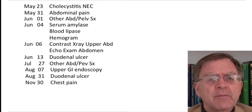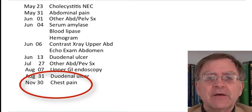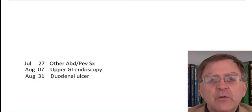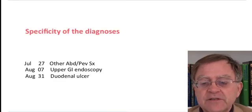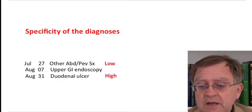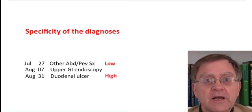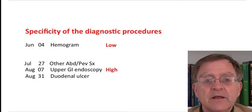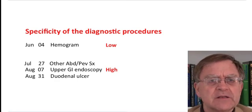That's the clinical story we might imagine from these insurance claims data. That diagnosis of chest pain at the end of the fall could be many things. We can begin to categorize these claims. The diagnoses differ in their specificity — 'other abdominal or pelvic symptoms' is relatively nonspecific, while 'duodenal ulcer' is relatively specific, separated here by a very specific test: endoscopy. Tests themselves can be specific or nonspecific. The hemogram tells us about blood loss; by comparison, the endoscopy is very specific for confirming an ulcer.